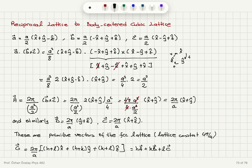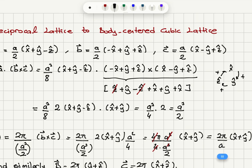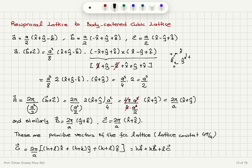For the body-centered cubic lattice, one choice of primitive translation vectors is: A = (a/2)(x̂+ŷ−ẑ), B = (a/2)(−x̂+ŷ+ẑ), C = (a/2)(x̂−ŷ+ẑ). The primitive cell volume A·(B×C) should be a³/2, since a BCC conventional cell has 2 lattice points per cell (1 body center + 8×(1/8) corners) and volume a³.